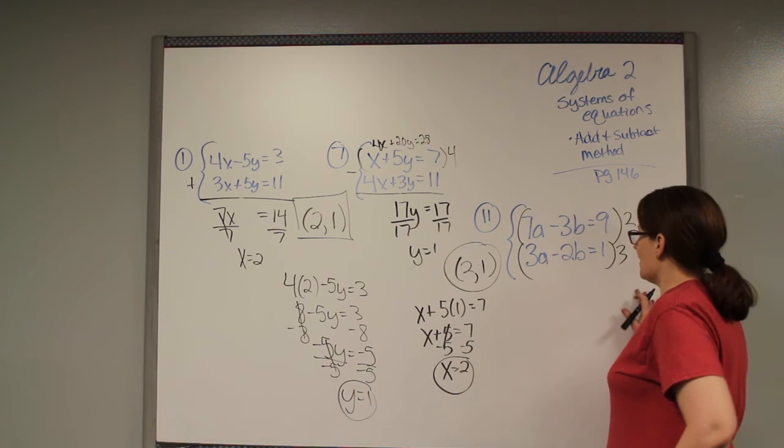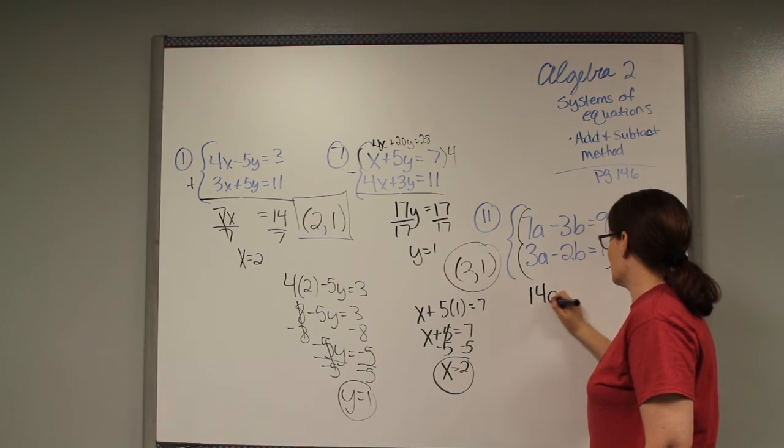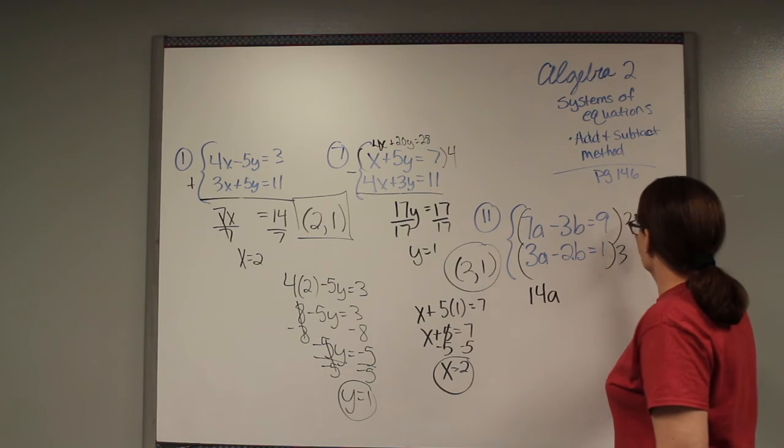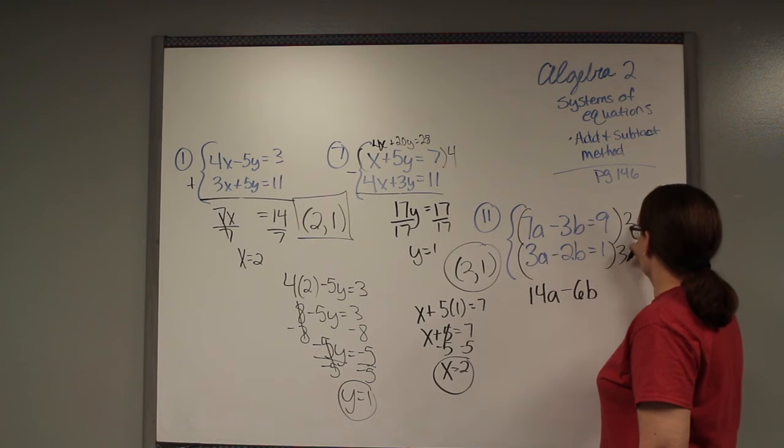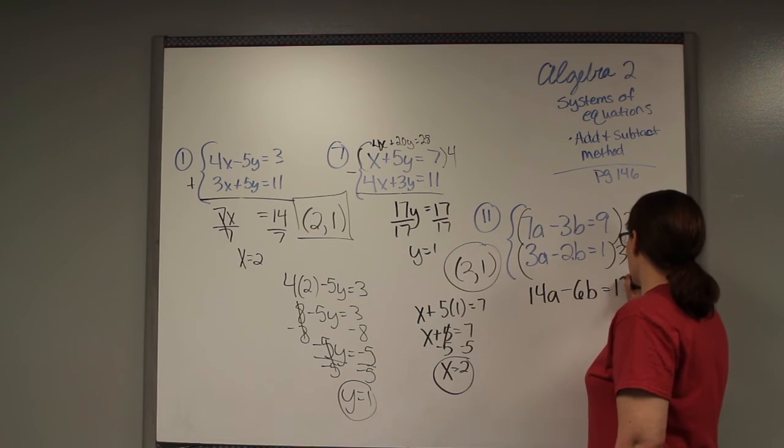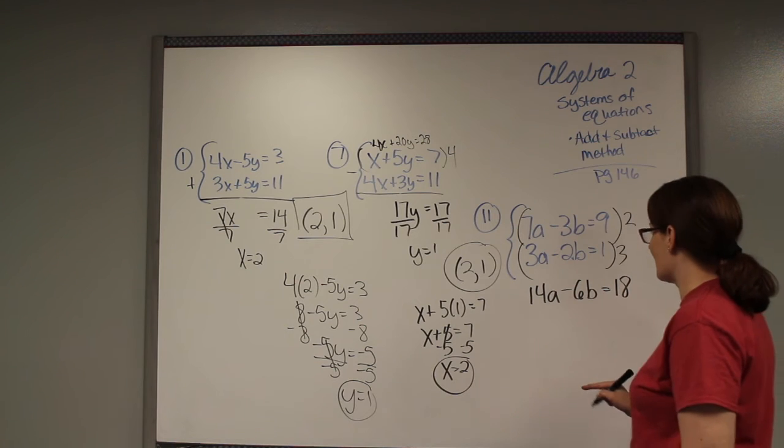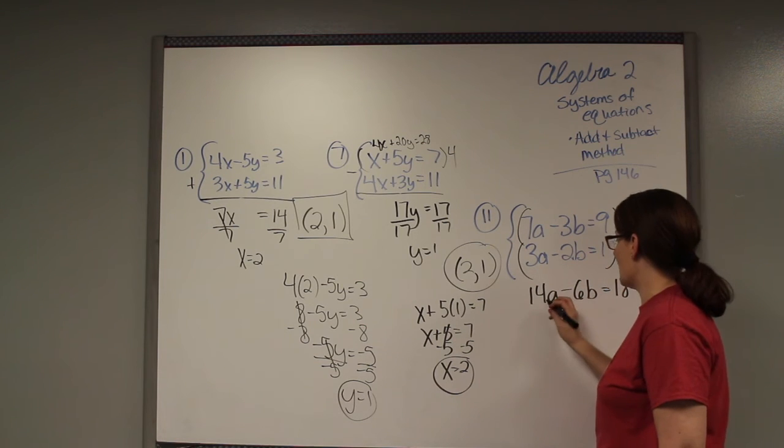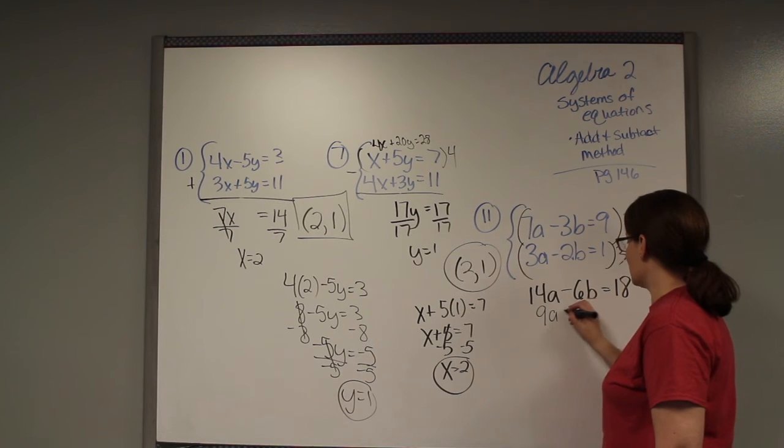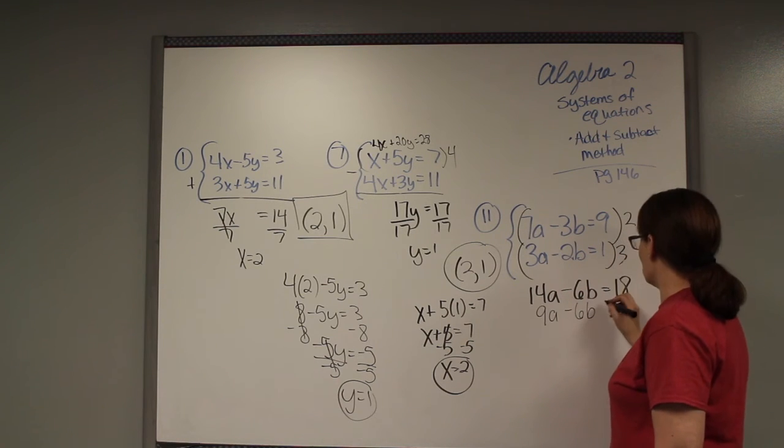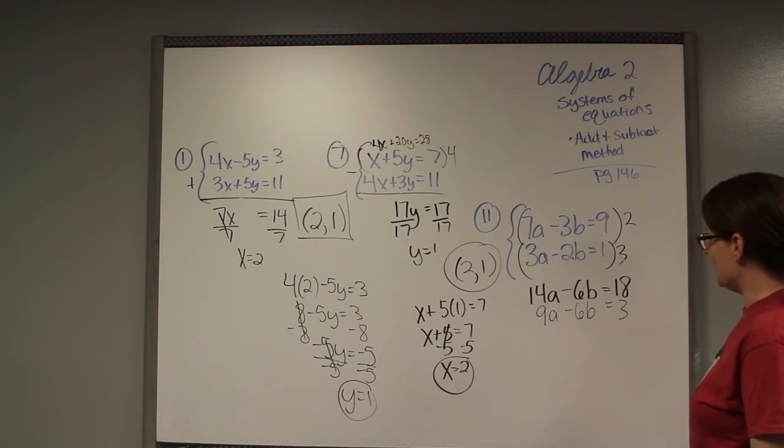I'm going to rewrite them. 2 times 7a is going to give me 14a. 2 times negative 3b will give me negative 6b. And 2 times 9 gives me 18. Remember, you've got to multiply everything, or this does not work. 3 times 3a is going to give me 9a. 3 times negative 2b is going to give me negative 6b. And 3 times 1 is going to give me 3. Now I can work with these.